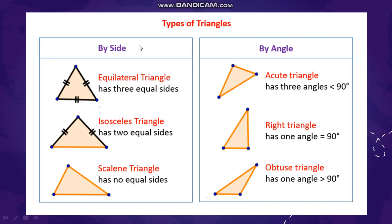As you can see, there are three types of triangles based on sides. If a triangle has all three sides equal, it is called an equilateral triangle. A triangle with all its three sides equal is called an equilateral triangle.